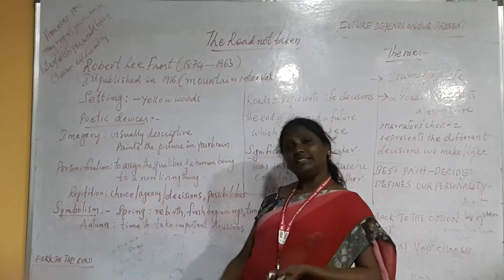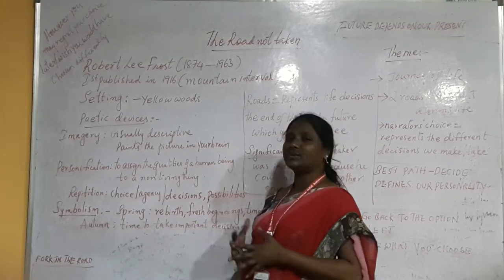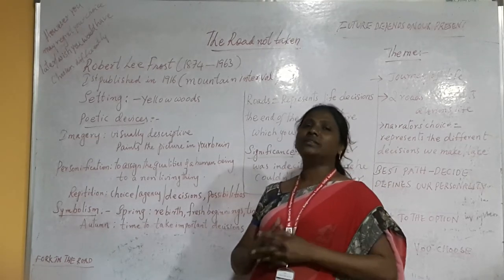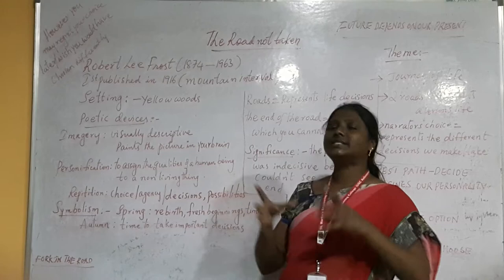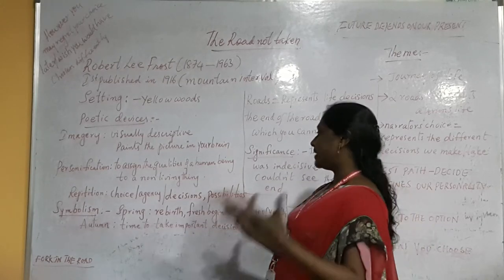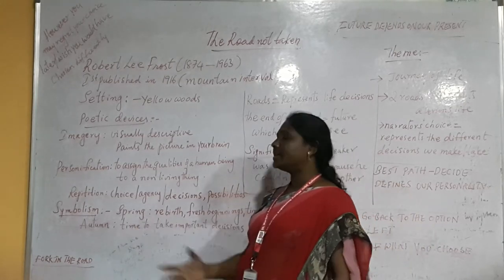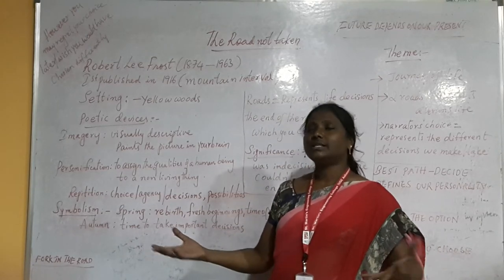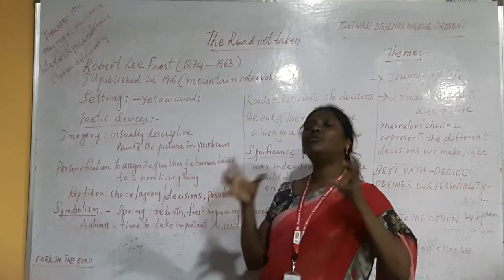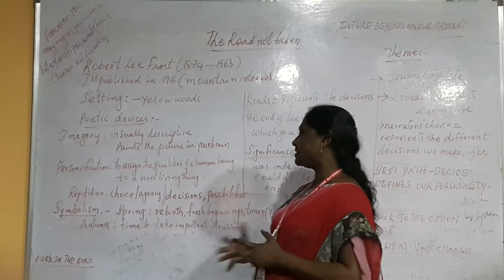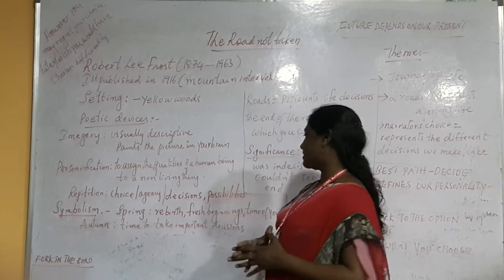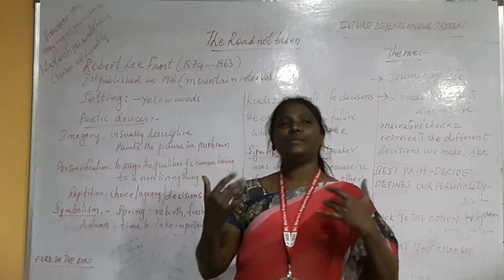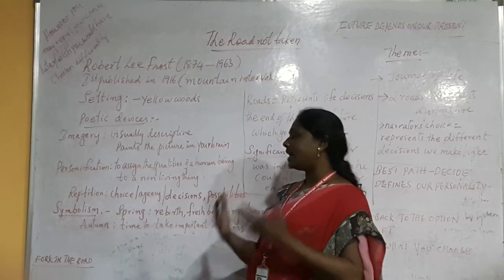The next important device the poet used is repetition — the repetition of certain words in the poem — to emphasize what the poet would like to say. We can see the word 'choice' used many times. He talks about two roads diverging at a point, emphasizing agency, decision-making skills, the possibilities, the choices, and the agencies a person has to take in life.